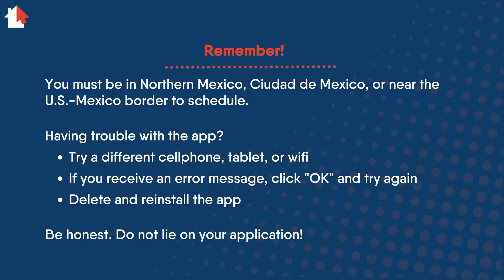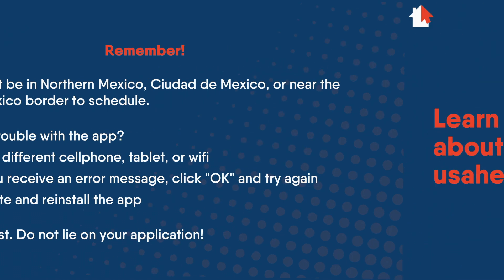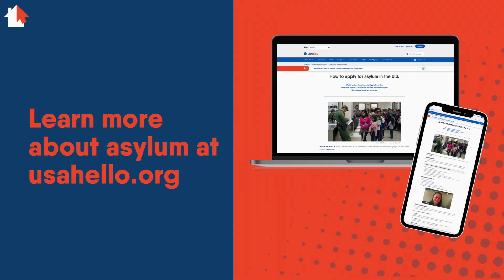If you have trouble using the app, try using a different cell phone, tablet, or Wi-Fi connection. If you receive an error message, click OK and try again. Deleting and reinstalling the app could help too. And lastly, be honest — do not lie on your application. Learn more about asylum at usahello.org.